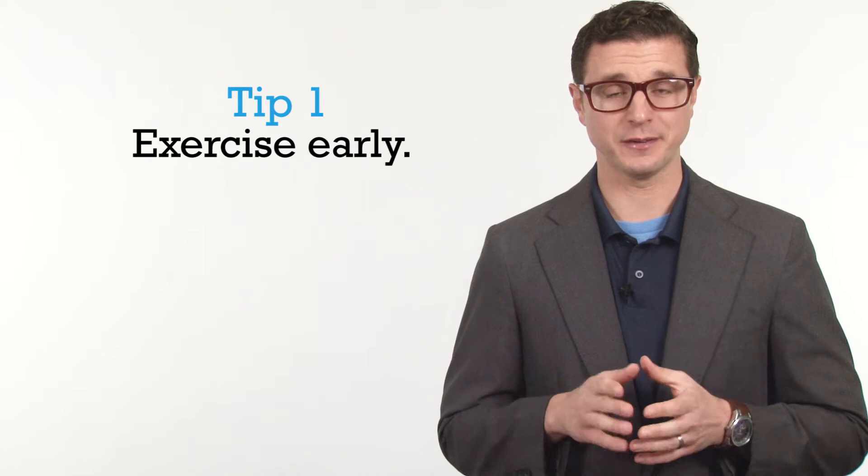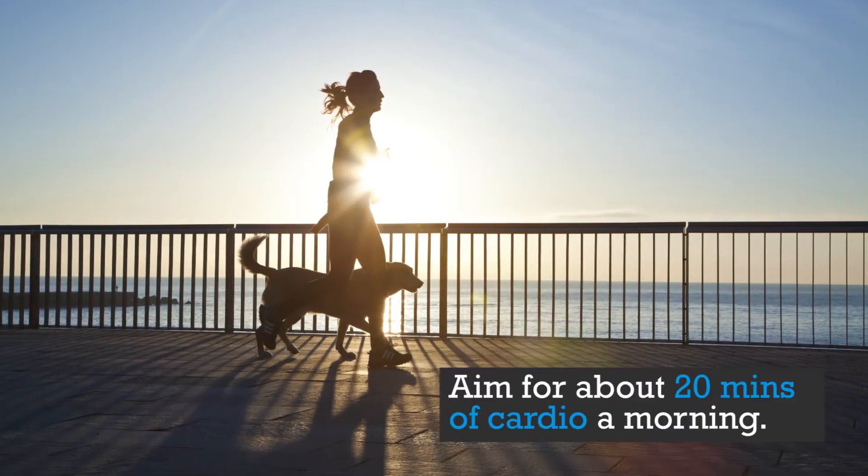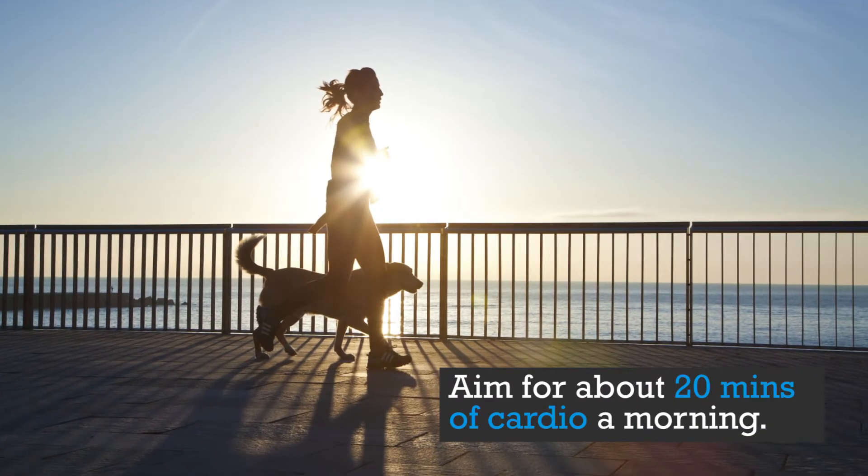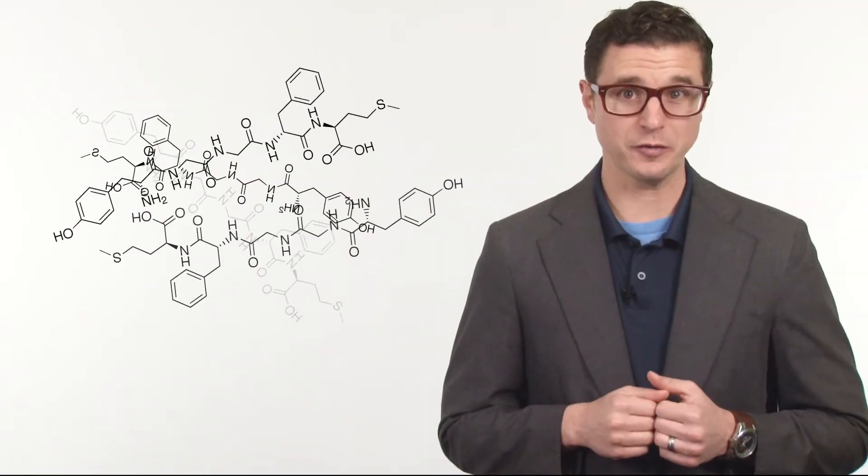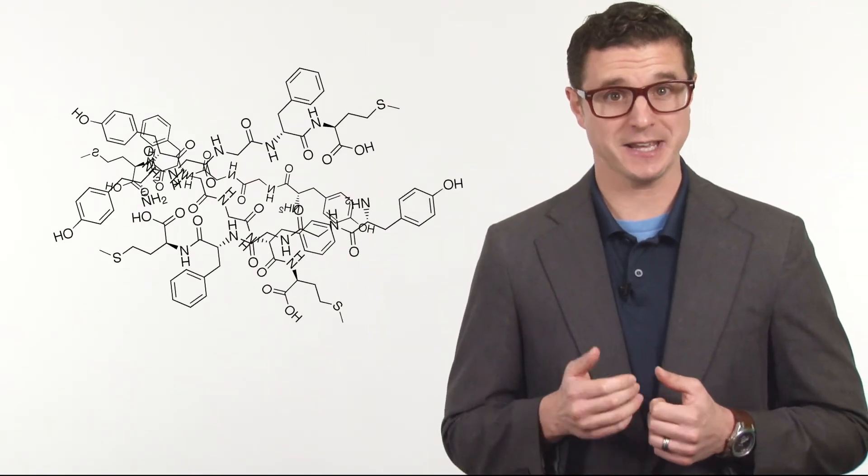Tip one, exercise early. Do about 20 minutes of moderate cardio in the morning. Get to the gym, go for a walk, or hop on the treadmill in your basement. The release of endorphins will put you in a good mood and, experts say, you'll be less likely to overeat later in the day.